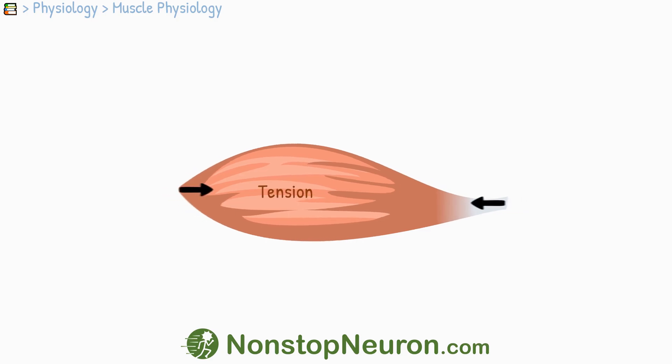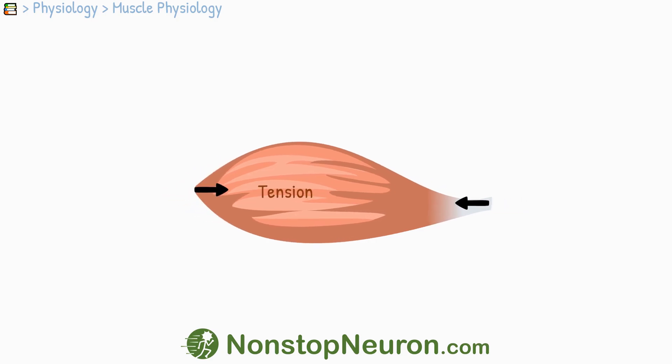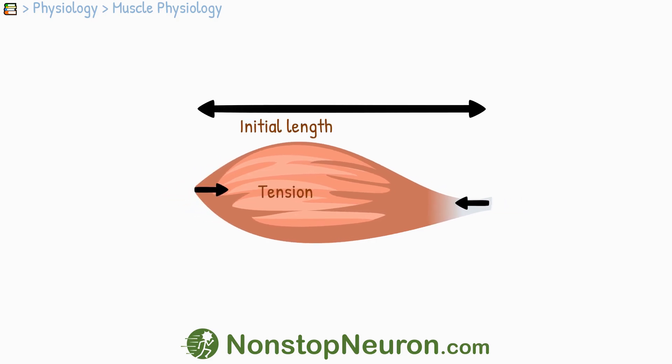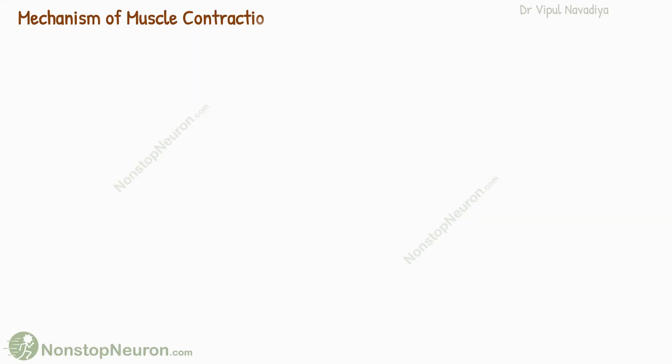The tension that a muscle can produce depends on the initial length of the sarcomere. In this video, we will understand this length-tension relationship. In order to understand this, first let's quickly revise some important relevant points from the mechanism of muscle contraction.